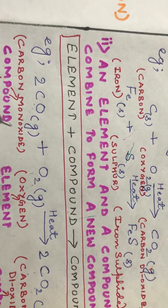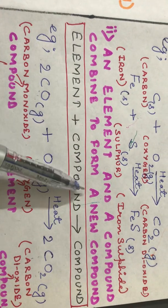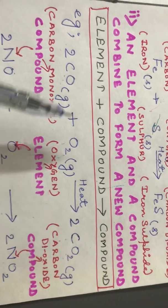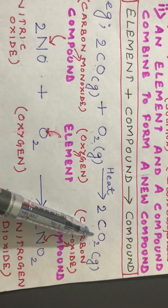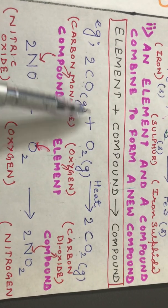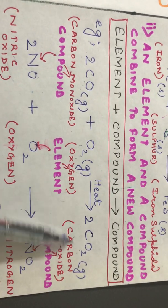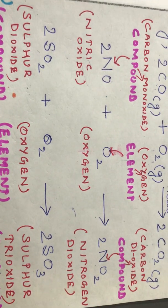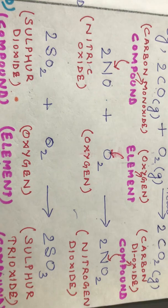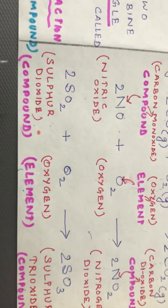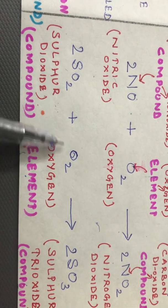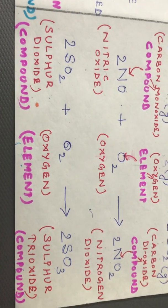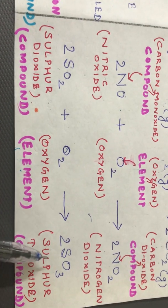The second type of combination reaction is when an element and a compound combine to form a new compound. For example, carbon monoxide CO plus O₂ gives carbon dioxide CO₂. Another example: nitric oxide NO combines with O₂ to form nitrogen dioxide NO₂. A third example: sulfur dioxide SO₂ plus O₂ gives 2SO₃. These are all examples of a compound combining with an element to form a compound.